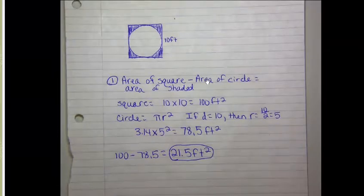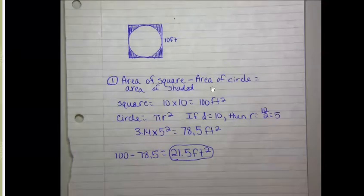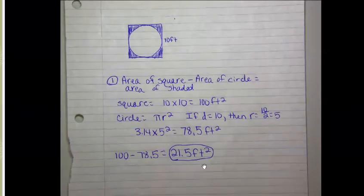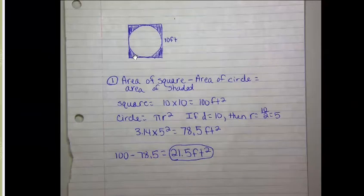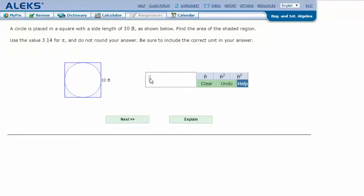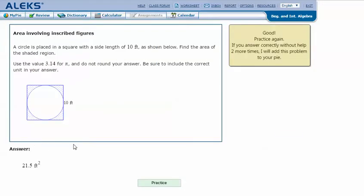Now we subtract the area of the circle from the area of the square: 100 minus 78.5 equals 21.5 feet squared for the area of the shaded region. In ALEX, I type in the answer — 21.5 feet squared — click next, and it says I got the correct answer. Thanks for watching.